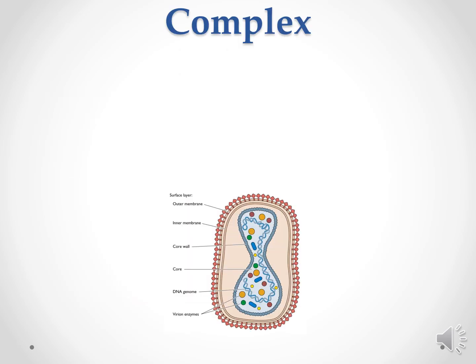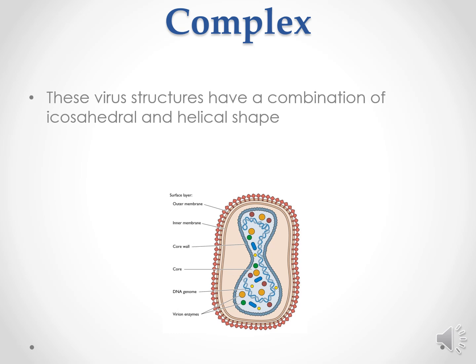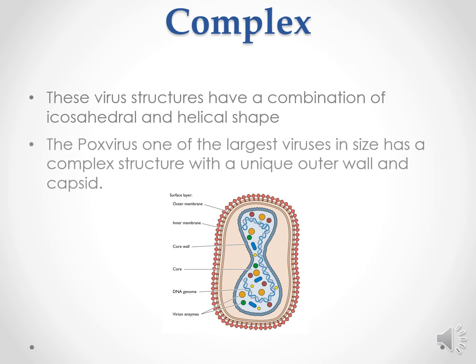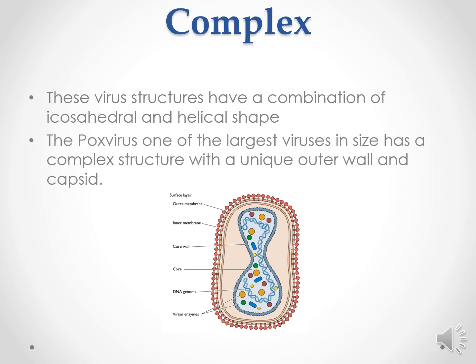Then come the complex forms. These virus structures have a combination of icosahedral and helical forms. The poxvirus is the largest of these and has a complex structure with a unique outer wall and capsid.